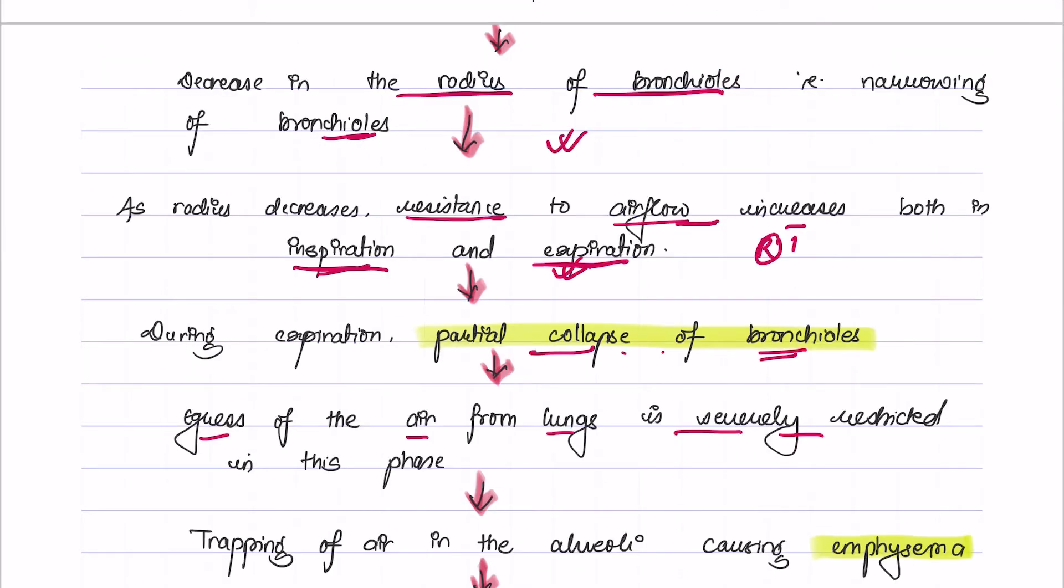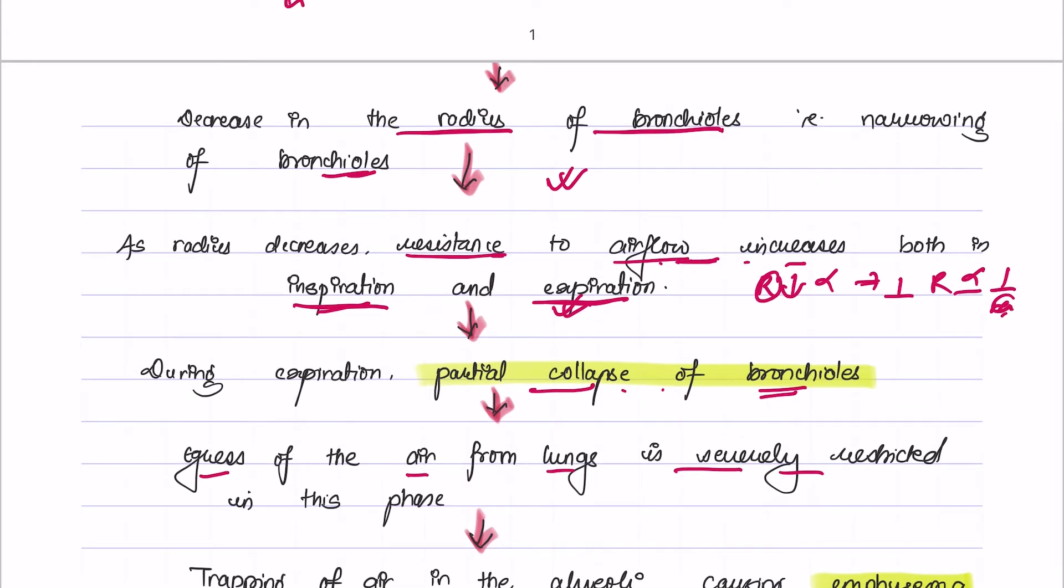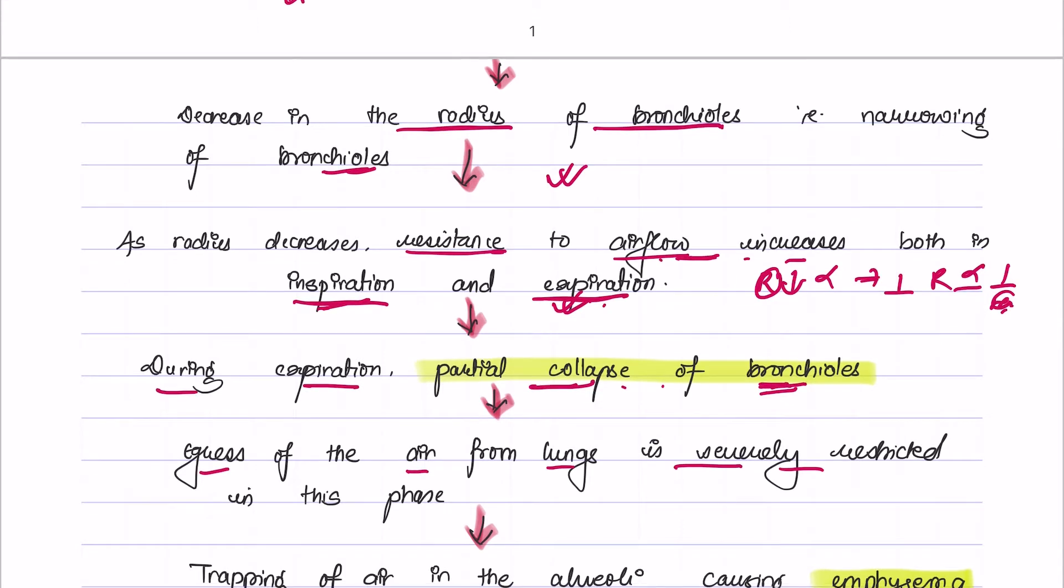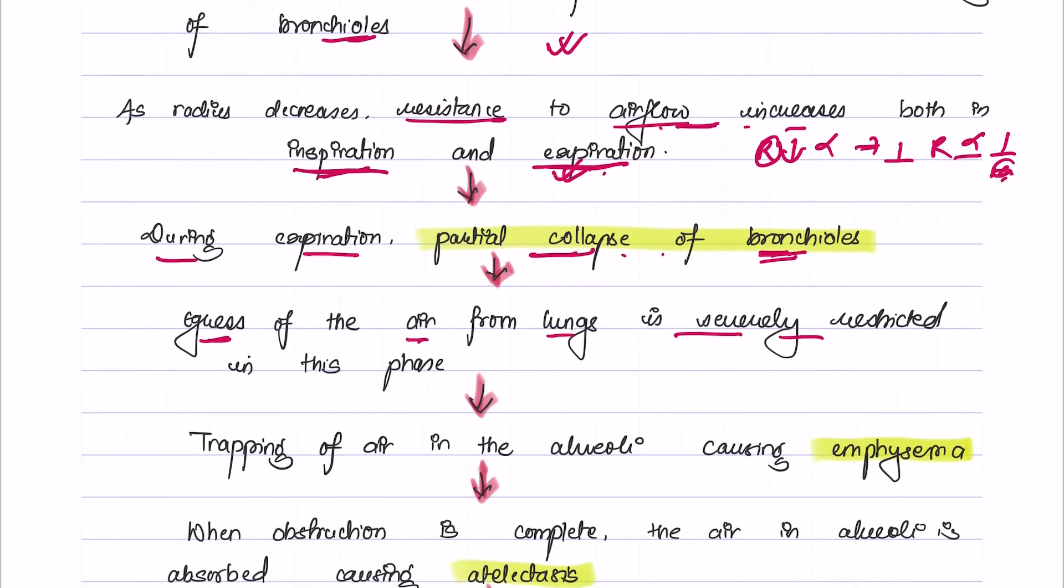We know that whenever the radius decreases, the resistance to airflow increases as radius is inversely proportional to resistance. So there will be increased resistance to airflow in both inspiration and expiration. During expiration, there is also partial collapse of the bronchioles and egress of air from the lungs is severely restricted.